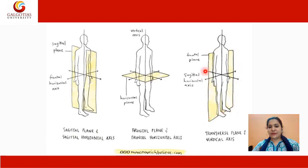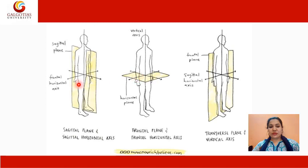Similarly, in this figure, the yellow part is called the plane and the lines passing are called the axis. In this figure, we have shown that there are three planes and three axes.